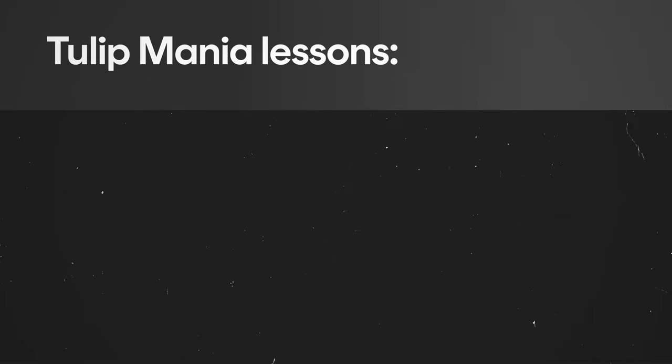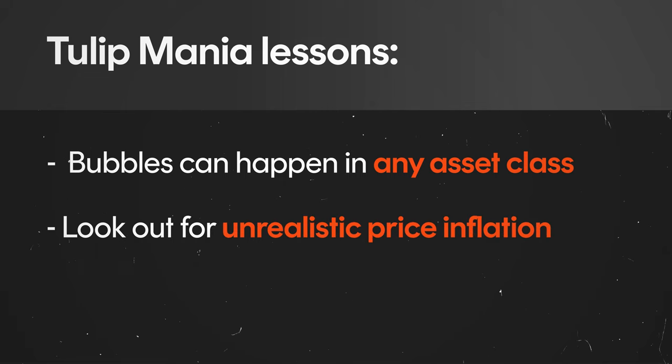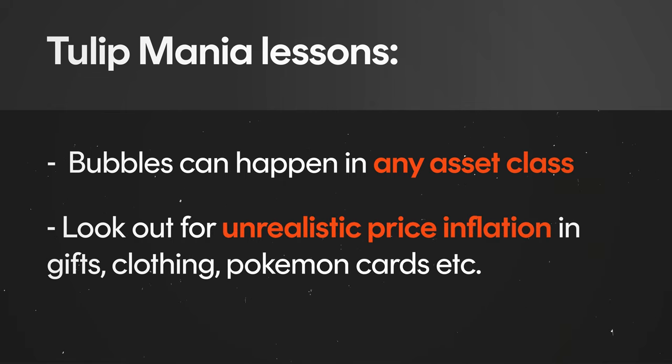As spring drew near and the tulip bulbs were close to flowering, the tulip bubble collapsed. Buyers stopped showing up to auctions, contract prices stabilized, and many buyers of planted bulbs refused to pay up when the tulips flowered. The key lesson is to remember that artificial inflation of prices isn't just confined to stocks. It can happen in any asset class, even one as unsuspecting as flowers. The crash of tulip prices didn't have a huge impact on the Dutch economy, but following bubbles would prove to be much more impactful on people's lives.